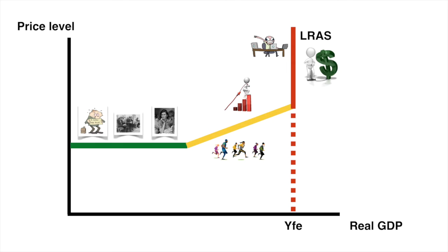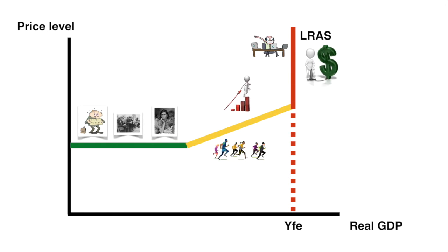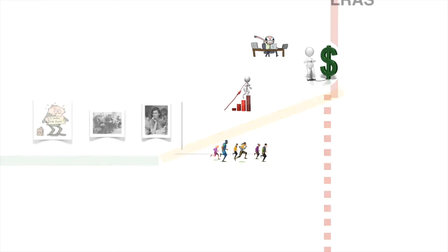To start, let's refresh your memory of the three distinct portions of the Keynesian long run aggregate supply curve. When shifting aggregate demand along this curve, we can have different outcomes based on which portion the curve is shifting along. We will separate shifts of aggregate demand into three sections: movement along the horizontal portion, movement along the upward sloping portion, and finally movement along the vertical portion.